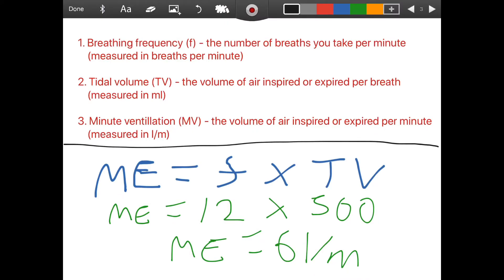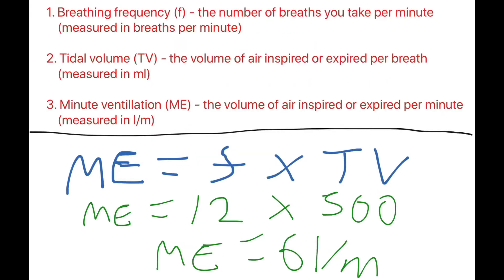First things first, let's look at the key respiratory formula. The key respiratory formula you need to know is: minute ventilation equals breathing frequency times tidal volume. For example, an untrained athlete has a breathing frequency of 12 breaths per minute and a tidal volume of 500 millilitres, giving a minute ventilation of 6 litres per minute.